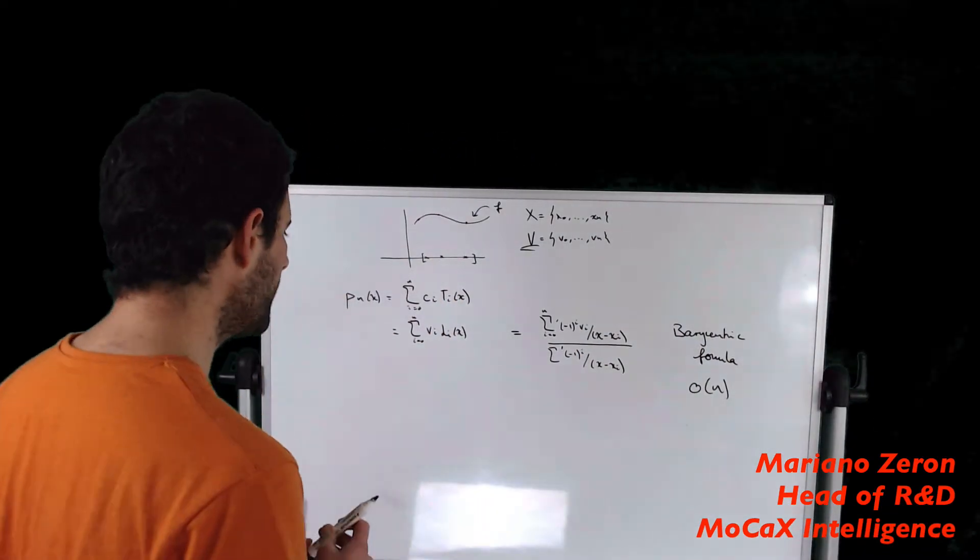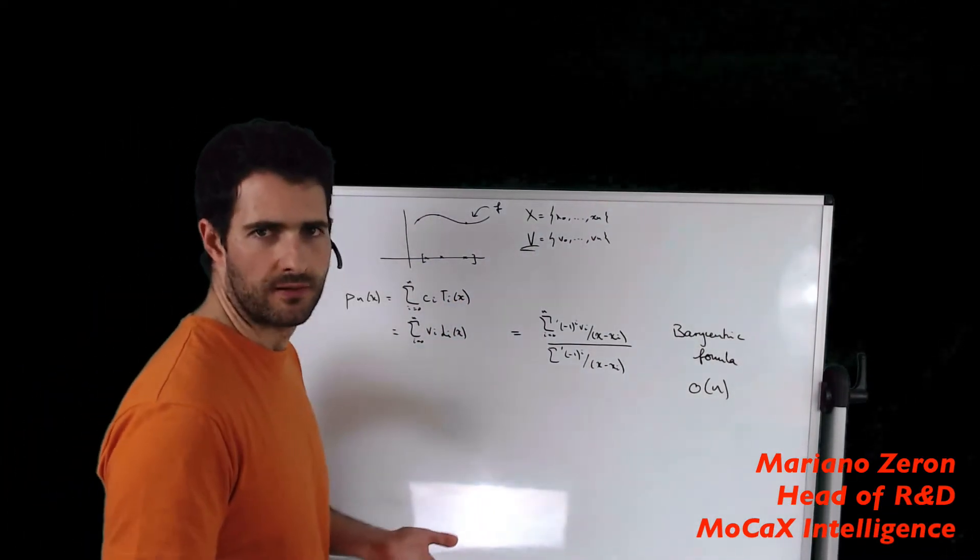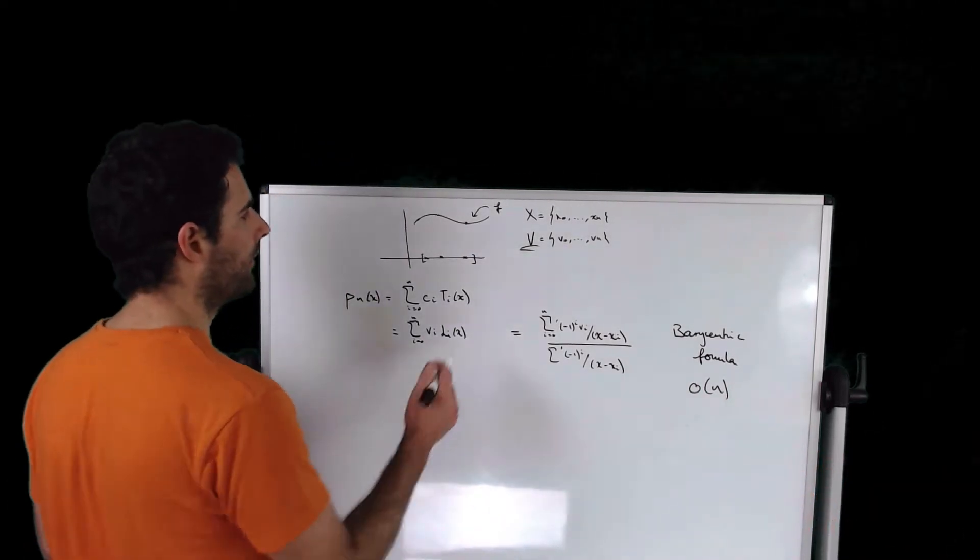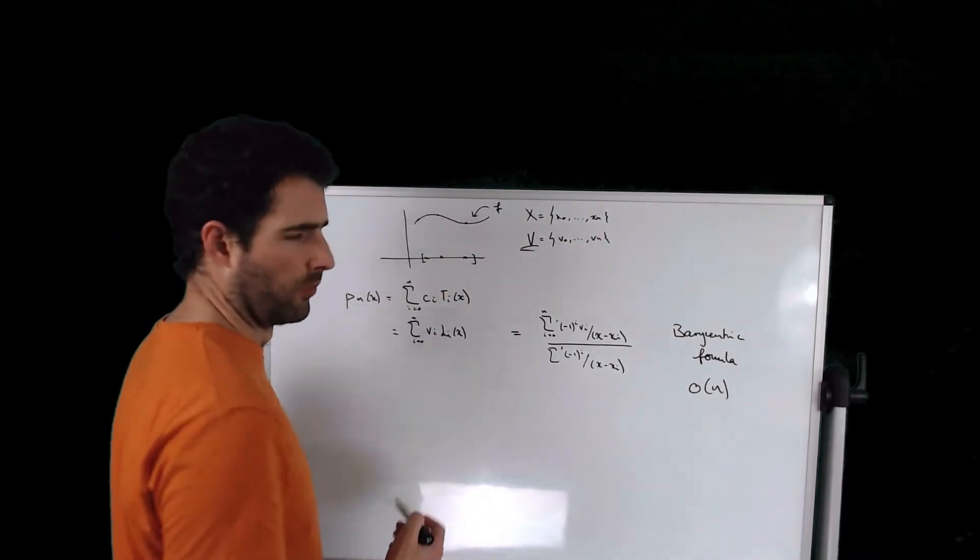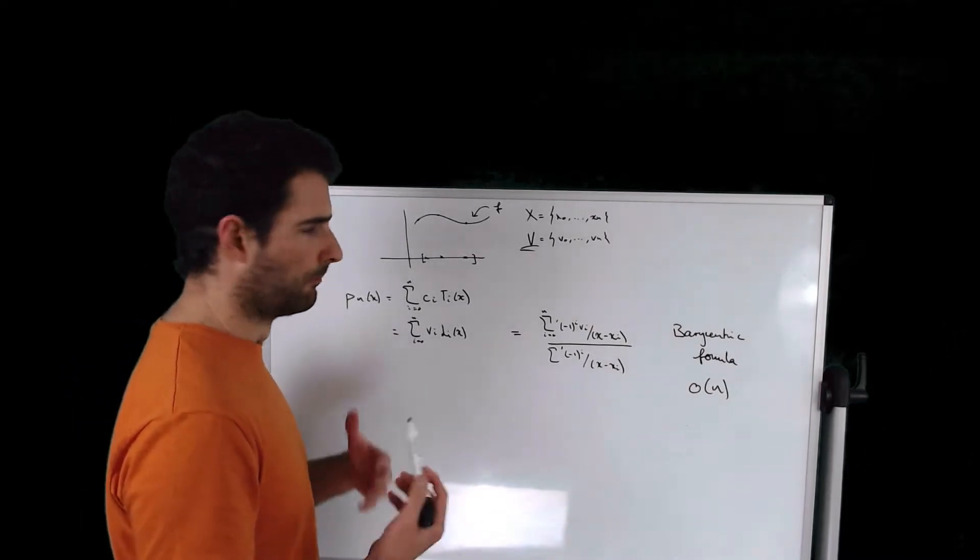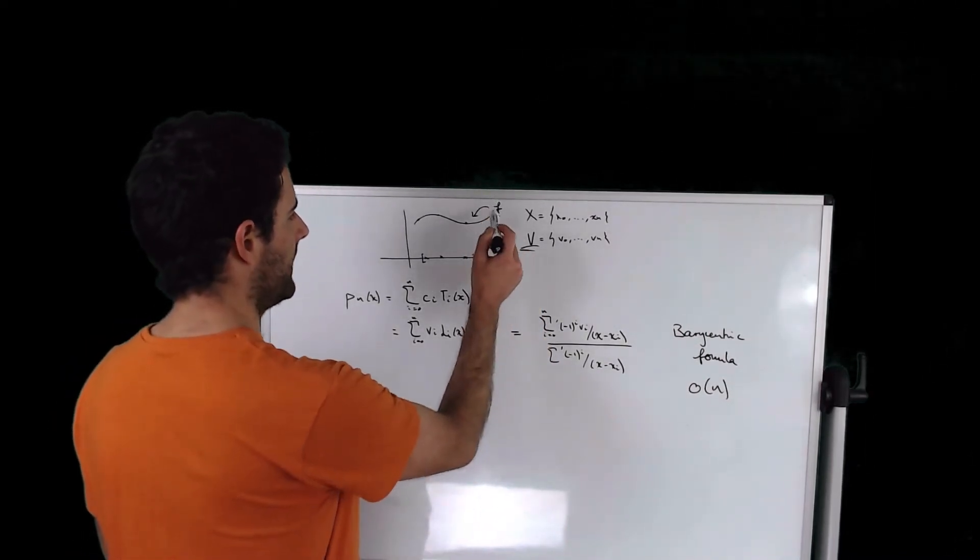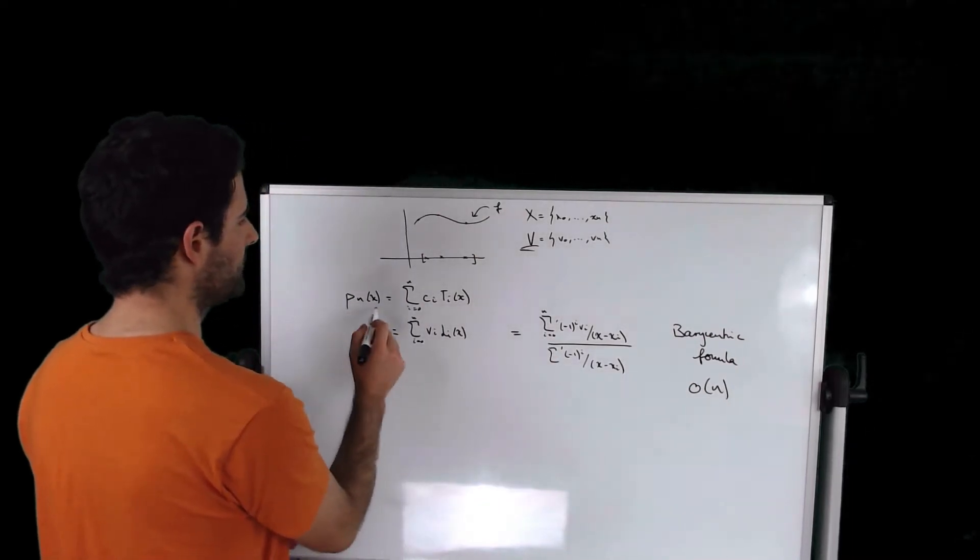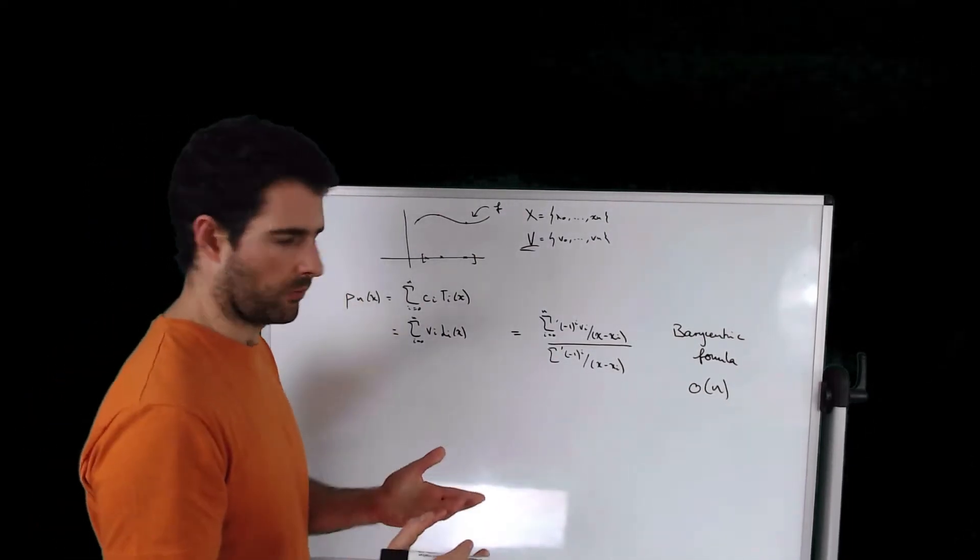So what do we have so far in terms of evaluating Chebyshev objects? We know that function f that we want to approximate has a Chebyshev object that you can build once you evaluate the function f on Chebyshev points, and that Chebyshev object can be expressed in two different ways.